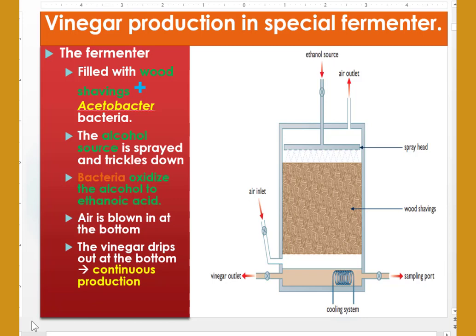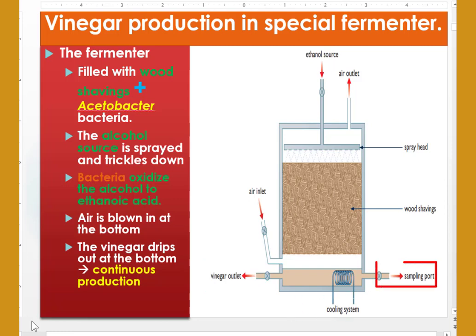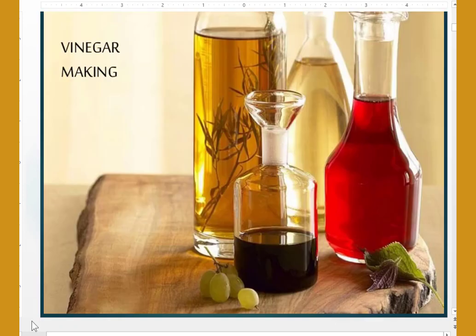You have to watch properly the setups of special fermenters. When we see the setups of special fermenters, there is a spray head, air outlets, ethanol source inlet, air inlet, vinegar outlets, cooling system, and sampling ports. This is what it looks like — this is the product of vinegar.